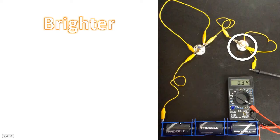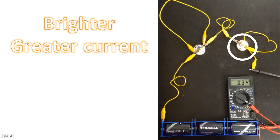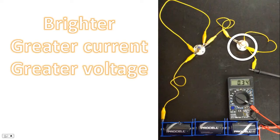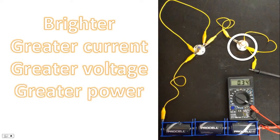And so the question is, why has it gotten brighter? Well, we know there's greater current. There's also greater voltage. The voltage is not shared between two loads now. It's only going to one load. And so if you have greater current and greater voltage, you have greater power. Hence, the light bulb is brighter.